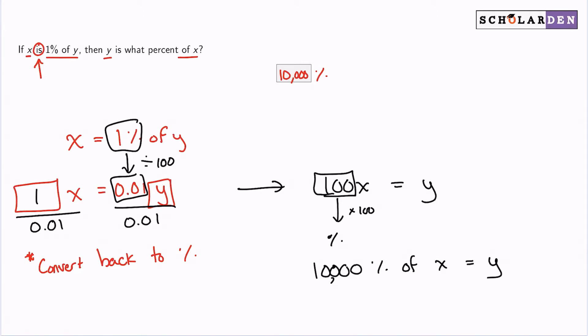So that gives me 10,000% of x equals y. Because to translate from a decimal to a percent, we multiply by 100 because we're going backwards. And that's why 10,000 is the answer.